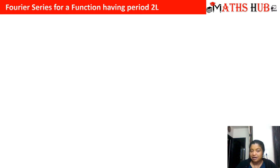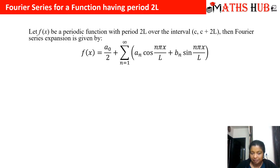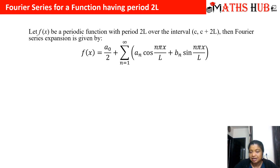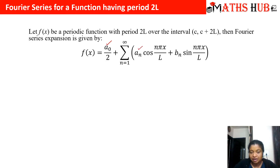Let us understand how we expand a periodic function having a period of 2L. Assume that f(x) is a periodic function with period 2L over the interval c to c plus 2L. Then the Fourier series expansion is given by f(x) = a0/2 plus summation from n=1 to infinity of a_n cos(nπx/L) plus b_n sin(nπx/L). We compare our interval with c and c plus 2L to calculate the values of L, and then calculate the Fourier coefficients a0, a_n, and b_n.